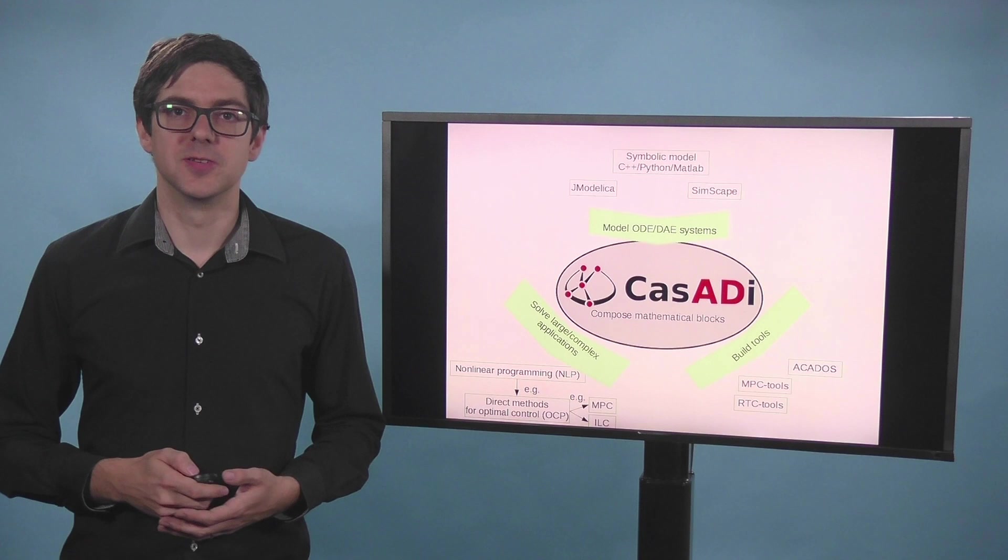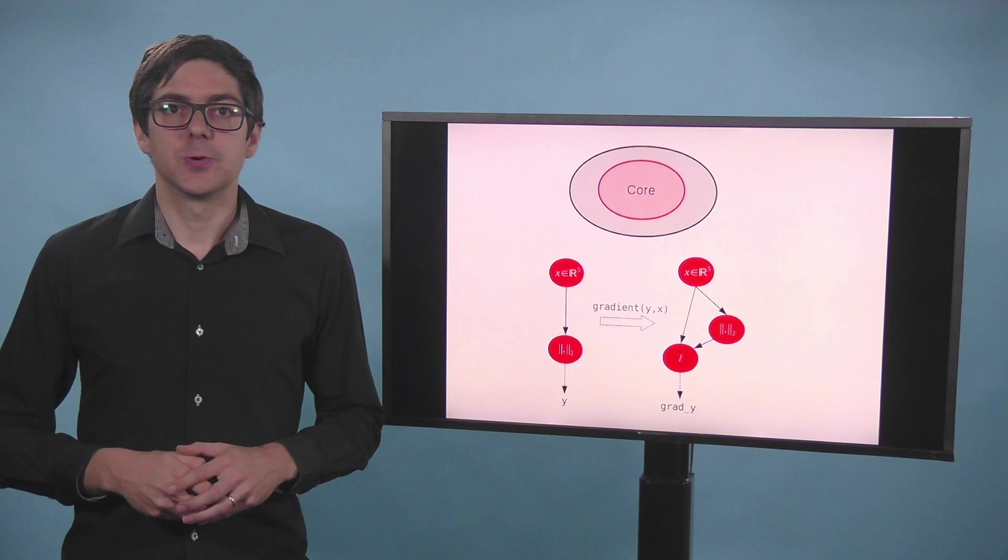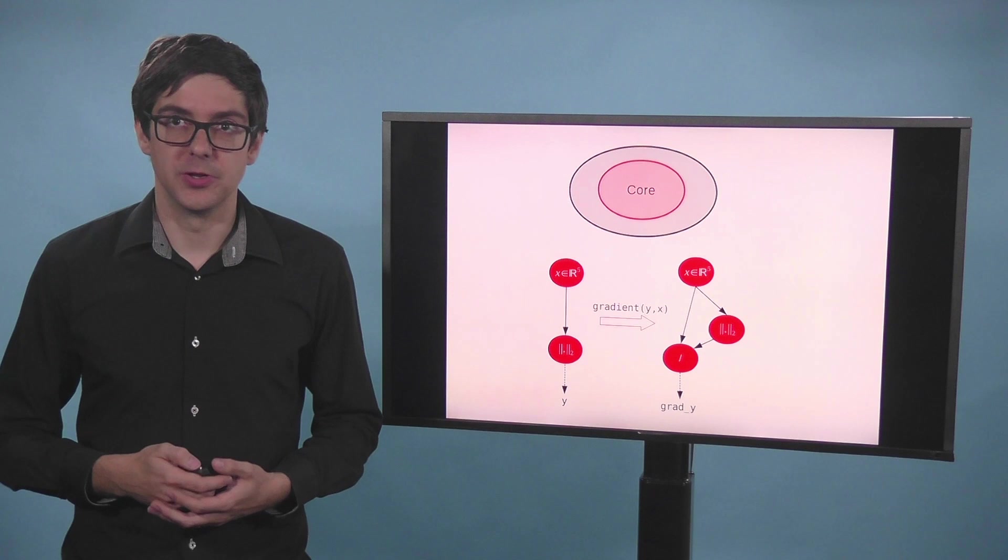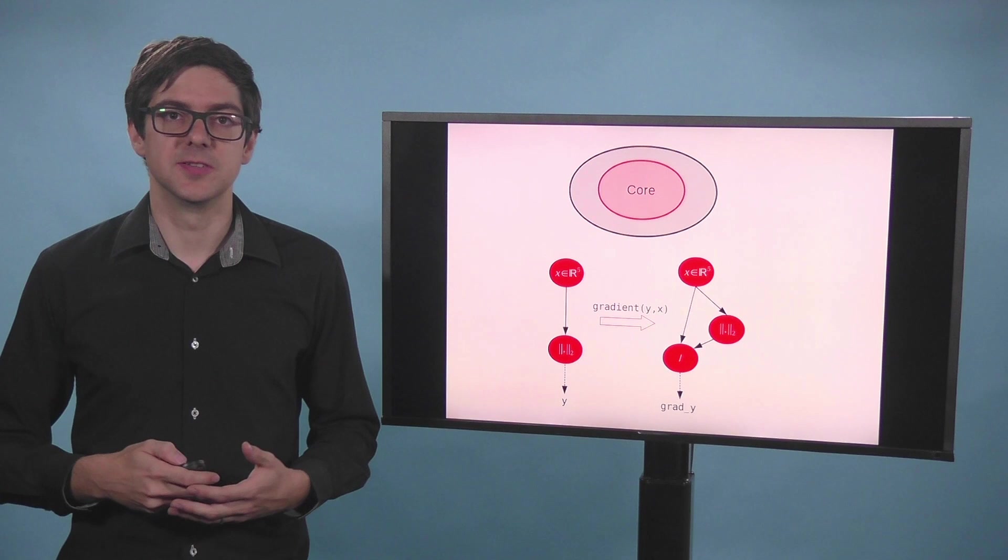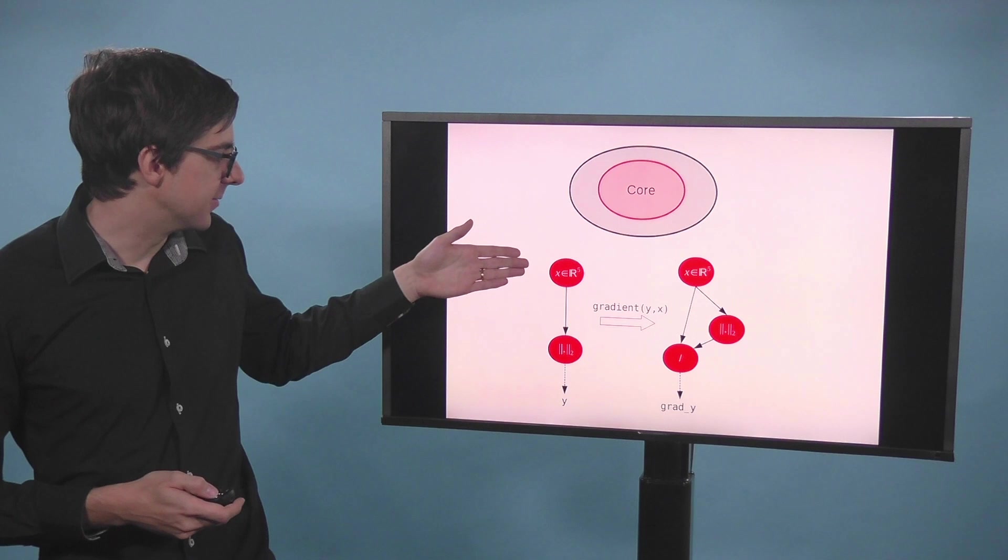So what is at CASADI's core? There are expression graphs. Any engineering computation you want to do, you should in the end express as an algorithm. And the algorithm is represented in memory as a graph. Back here on the left, you have a vector of length 5. And we're taking the 2-norm of it.